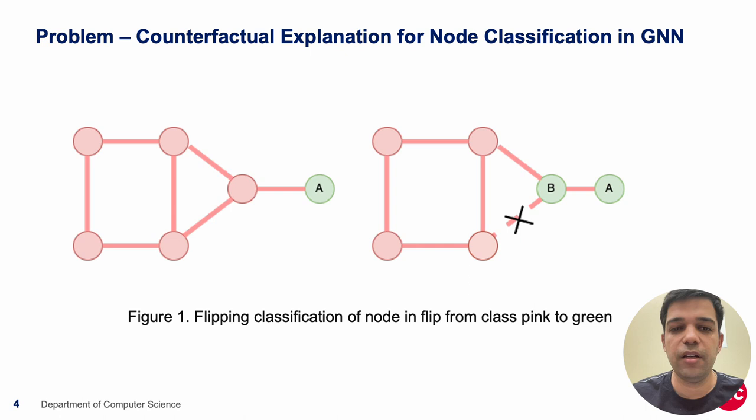So if we see the figure on the right, we have an edge that can be deleted and the classification for node B has changed from pink to green. This is how we got an explanation as to why this node is labeled pink and not green.